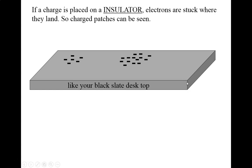If you place charge on an insulator, it will just stay there in patches — it can't migrate around like the electrons in metal. So if you were to rub a balloon on your head and wipe it on your desk, you would have a charge patch. If you had some sort of charge viewing machine, you'd be able to see glowing patches on your desk.